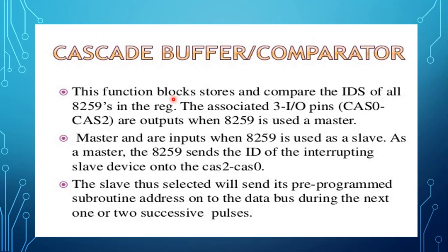To implement the interrupt, the microprocessor should be enabled by writing the EI instruction (enable interrupt instruction). The 8259 should be initialized by writing a control word in the control register. The 8259 requires two types of control words: the first is the initialization command word ICW, and the second is the operational command word OCW. The ICW sets up proper conditions and specifies the RST vector address. The OCW performs functions such as masking interrupts, setting up status, read operations, etc.